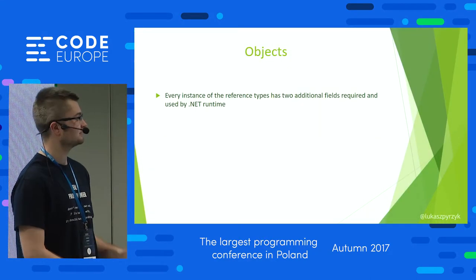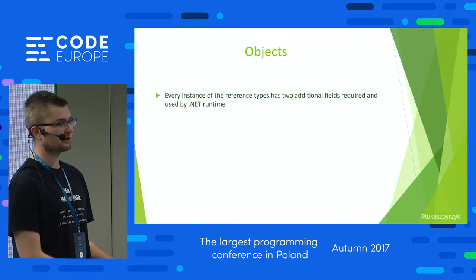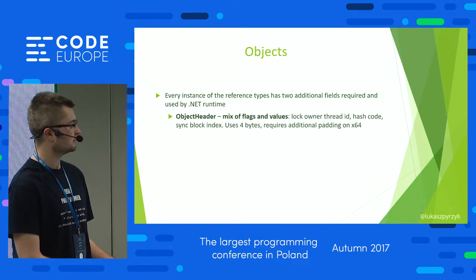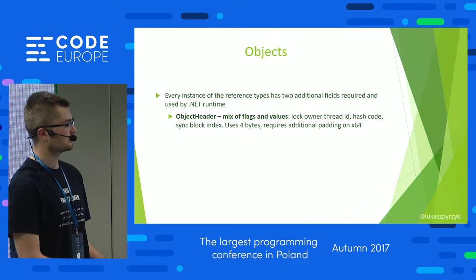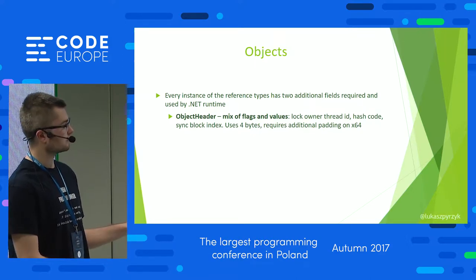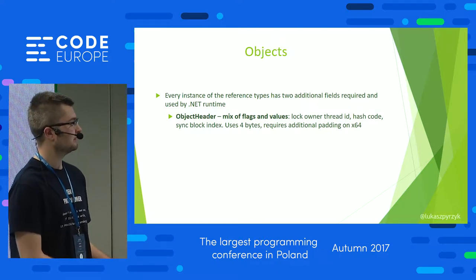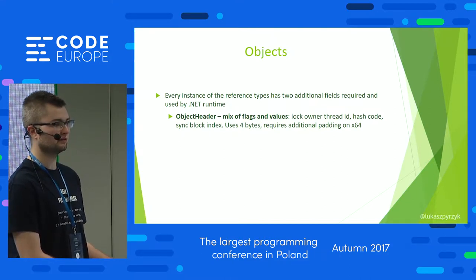So, objects. Every instance of an object in .NET has two additional fields required by the CLR. The first of them is the object header — a mix of flags and values used by the runtime. For example, in this place we have information about whether the object is locked, and if so, by which thread ID. It is int-sized, so it contains only four bytes.